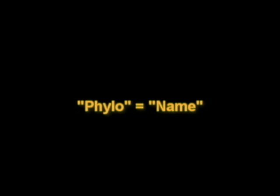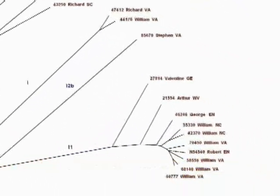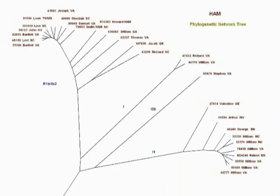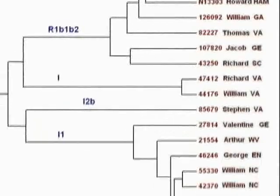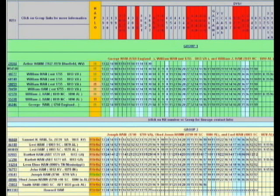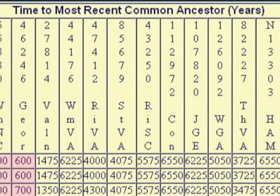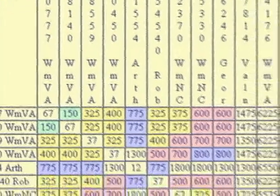The term 'phylo' means name, and a phylogenetic chart should be a name-based chart based on genetic data. The phylogenetic charts are simply charts of the DNA data arranged by the name associated with the Y-DNA kit. It is a basic chart of the DNA results. There are several ways to chart out the data, but the charts posted to Ham Country are based upon the data for the time to most recent common ancestor, or TMRCA, as returned from Dean McGee's Y-DNA comparison utility.